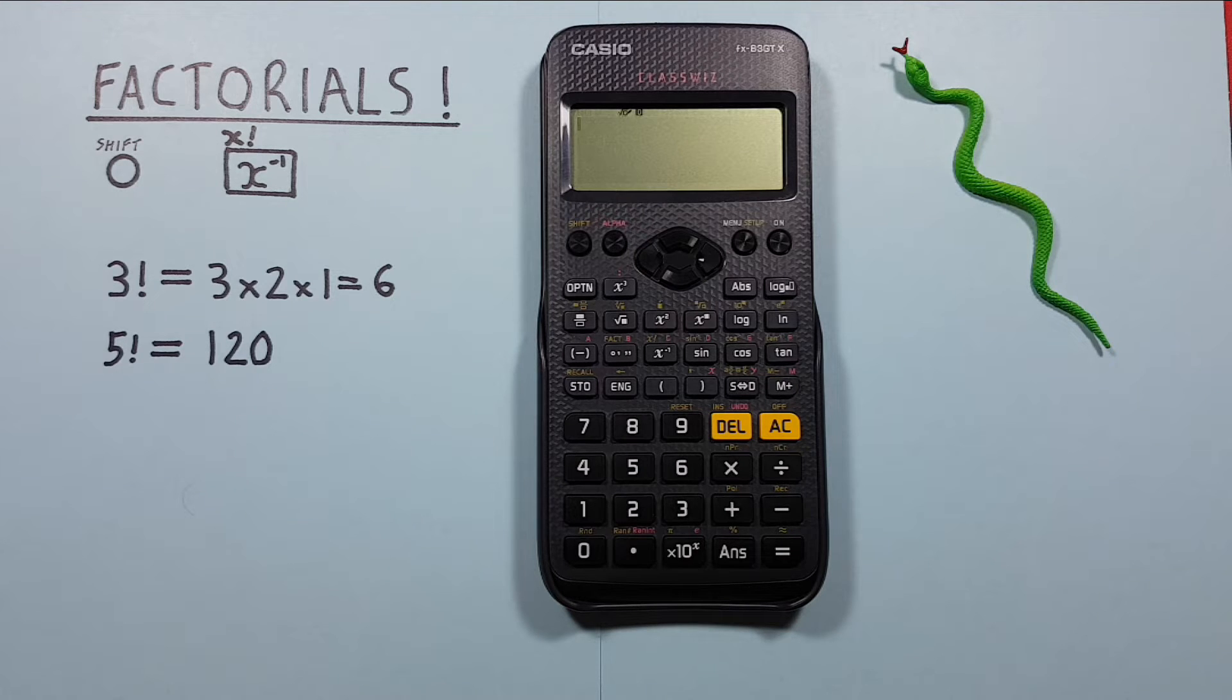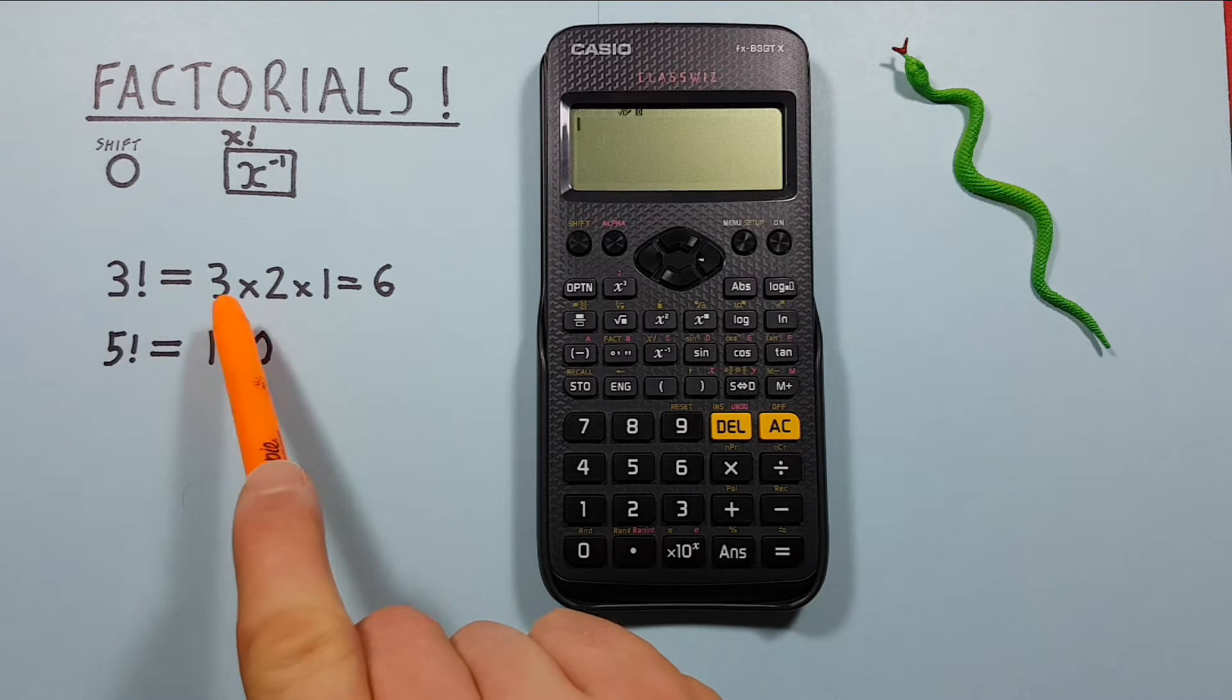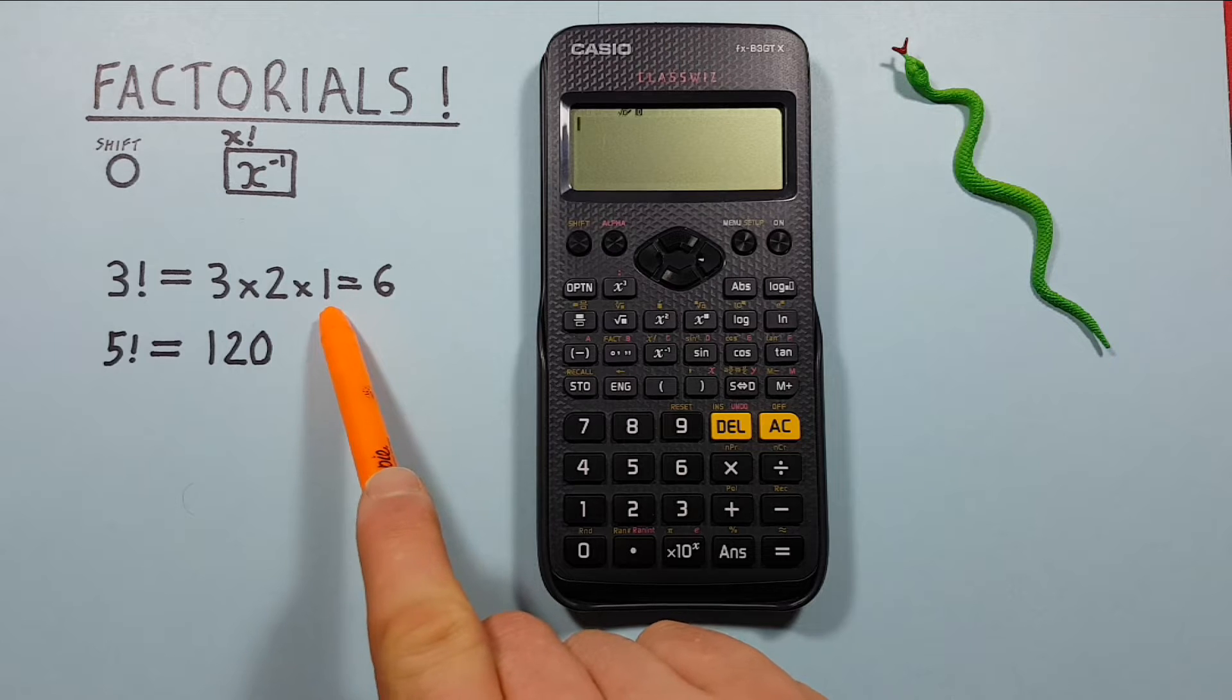We know a factorial is the product of a number and all integers below it multiplied together. So 3 factorial is the same as 3 times 2 times 1 which equals 6.